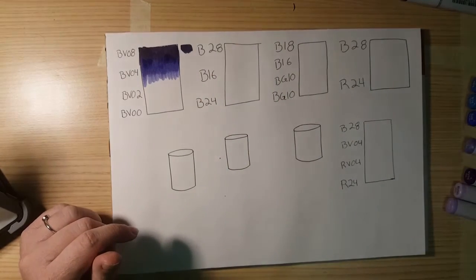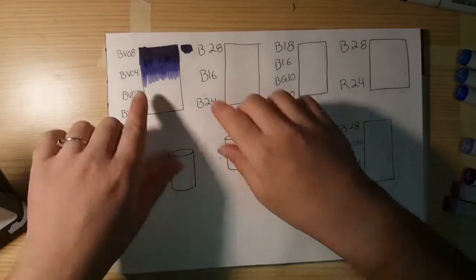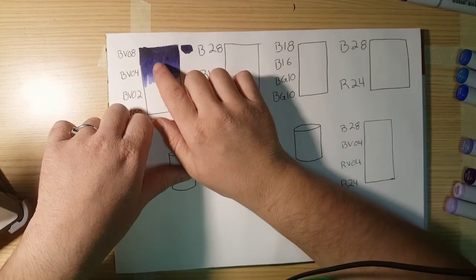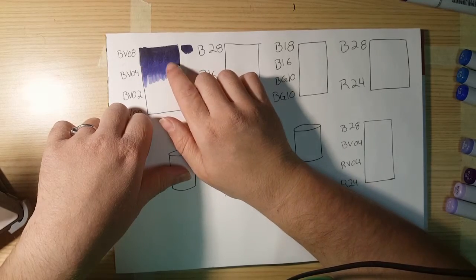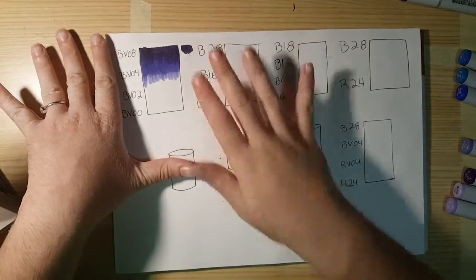Sometimes you do have to go over a couple of times just to get rid of any dark lines that you'll find. Like this one still kind of has it right down the middle there. But it's not too noticeable.